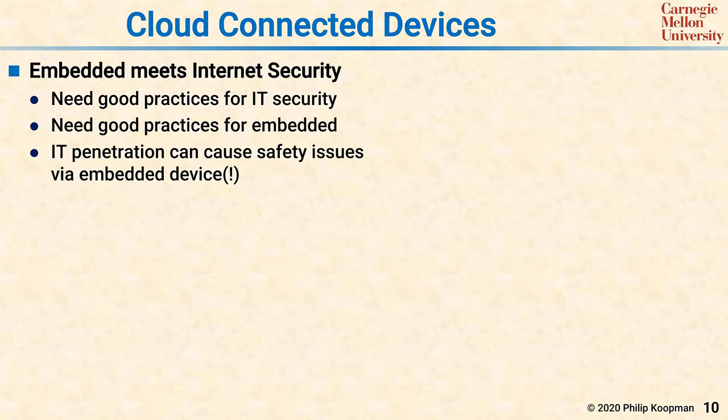As more and more embedded systems are connected to the internet, there are novel vulnerabilities that have to do with cloud-connected devices. When embedded systems meet internet security, things can get very complicated — you need not only good practices for IT enterprise security, but also good practice for embedded system security, and they aren't quite the same. Don't forget, if you have a cloud server that can control thousands of embedded devices and someone gets into the cloud server, now they have the ability to mess with thousands of devices — a much bigger multiplier than simply breaking into a single machine.